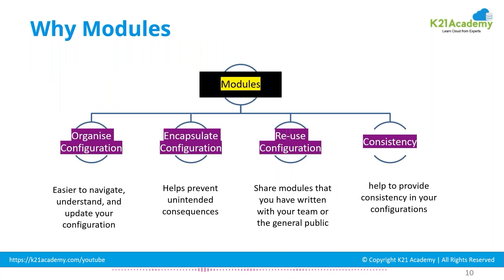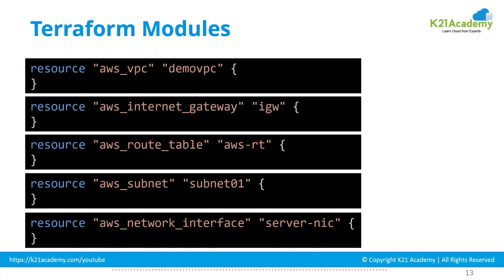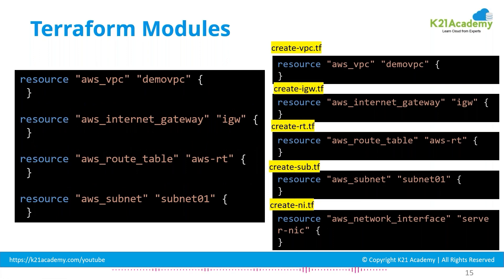So why should you use modules? The first and foremost reason is organizing your configuration files. Take a simple example: if you're using four or five resources with multiple required attributes — like VPC properties — you could write everything in separate .tf configuration files. Rather than having three thousand or five thousand lines of code and searching for where to make changes, you can have a separate configuration file for each component.